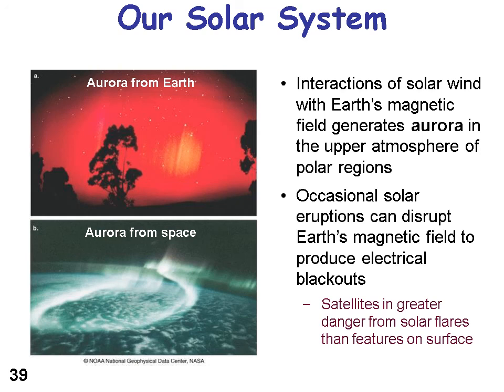Occasionally solar eruptions can disrupt the Earth's magnetic field and produce electrical blackouts. It's interesting to think about what would happen if we had too large a solar flare and what that would do to the electrical systems that rely on electricity here on Earth.